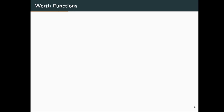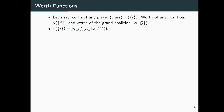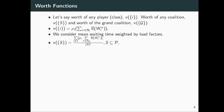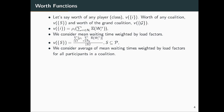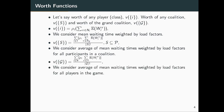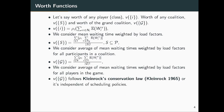Before calculating the Shapley value, the core, and nucleolus, we need the worth functions. Let v(i) be the worth of a player, which is rho_i times the summation over all pi in N_i of the expected waiting time of player i under policy pi. We consider expected waiting time multiplied by the load factor of class i. For a coalition, we consider the average mean waiting time weighted by load factor for all participants in the coalition.